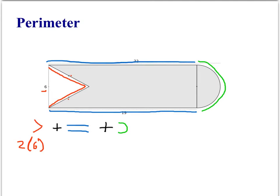And we'll add to that the two lengths, the blue lengths, that are both 19. But there are two lengths that are 19 units long. And then we have to add half of the circumference of a circle.